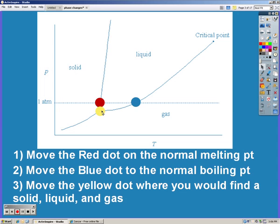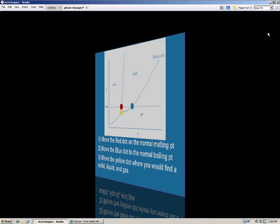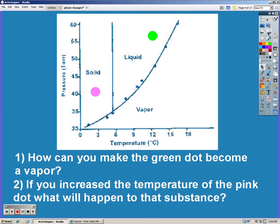Pause the iPod and answer those two questions in your head. We wanted to make the green dot become a vapor - we could either increase temperature or decrease pressure, or a combination of both. If we increase the temperature of the pink dot, then first it would liquefy and then vaporize.